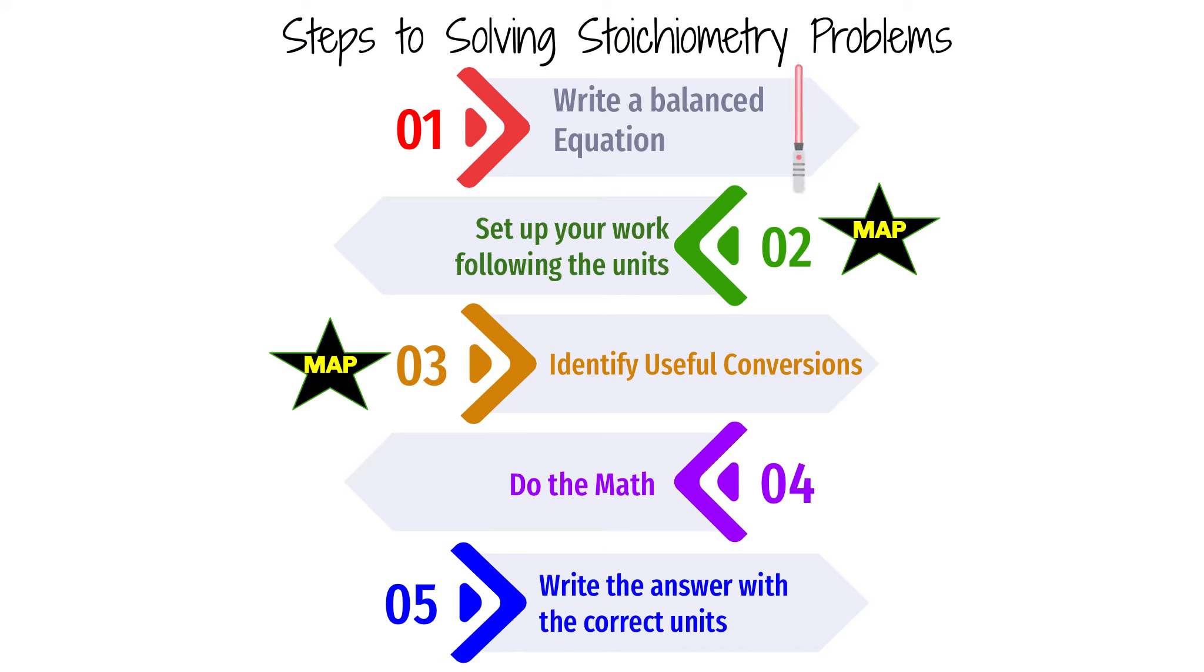Remember, the steps to solving a stoichiometry problem is you write your balanced equation, you set up your work following the units, so you're setting up your work with those railroad tracks, identify your useful conversions, and then do the math and write your answer with the correct number of units.